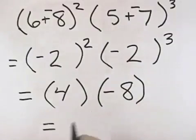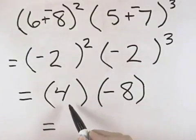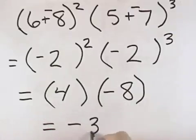At this point, then we have the product of positive 4 and negative 8. A positive times a negative is negative, 4 times 8 is 32, so our answer is negative 32.